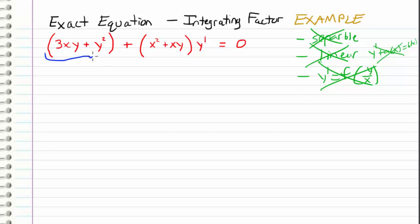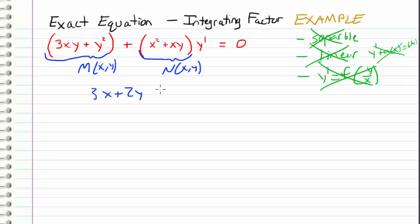If we take this to be our m(x, y) and this to be our n(x, y), in order to test for exactness, we test to see if the partial derivative of m with respect to y — which in this case is 3x plus 2y — is equal to the partial derivative of n with respect to x, which comes out to be 2x plus y. We can see that these two expressions are not equal, therefore this equation is non-exact.